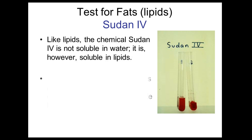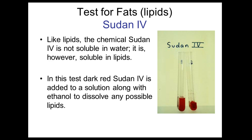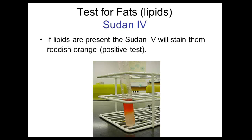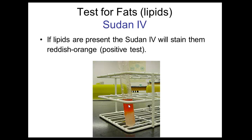For the Sudan 4 test for fats and lipids: Sudan 4, like lipids, is not soluble in water but is soluble in lipids. Dark red Sudan 4 is added to the solution along with ethanol to dissolve any possible lipids. If lipids are present, Sudan 4 will stain them a reddish-orange, forming reddish-orange globules or little droplets at the top of the test tube — that's a positive test. If they're not present, that won't happen.